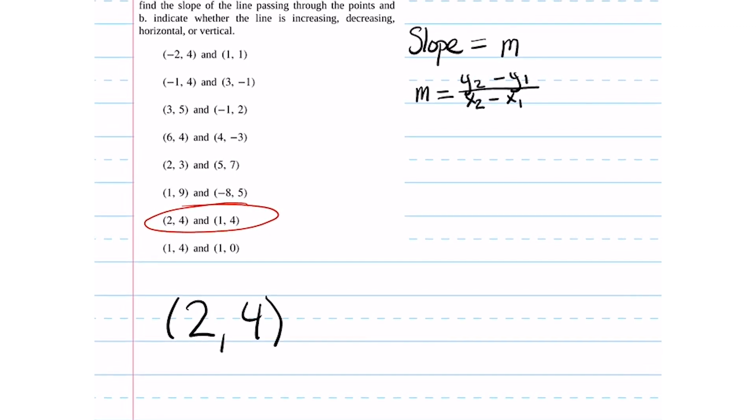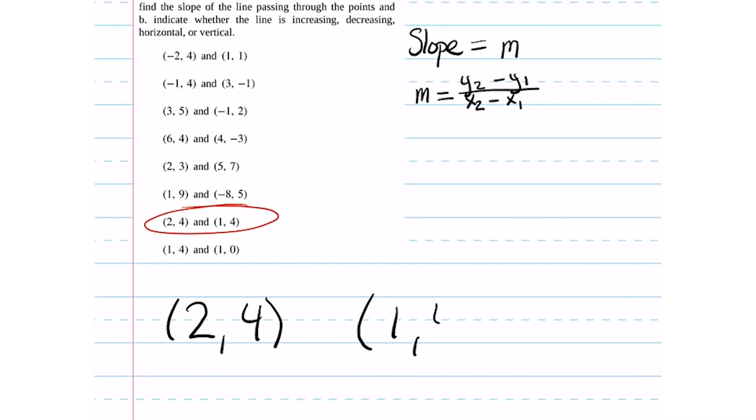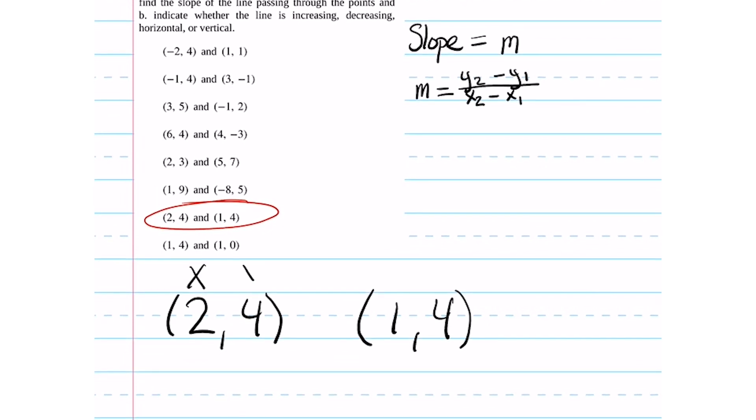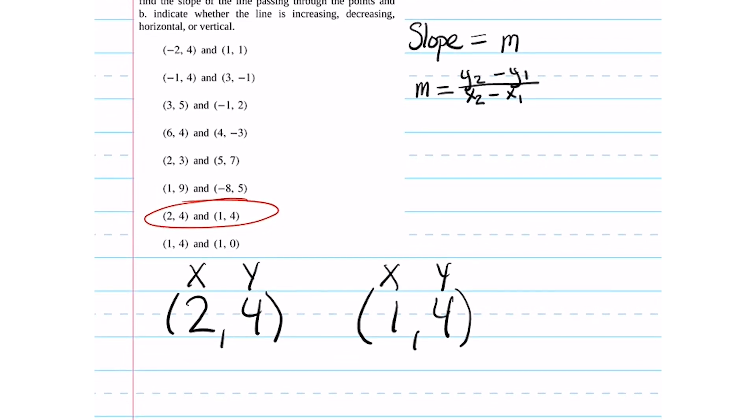This next problem can be a tad bit confusing, but you approach it exactly the same by writing down both of the points and labeling their x and y.